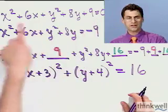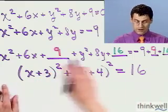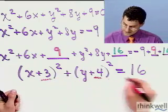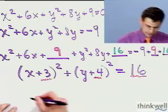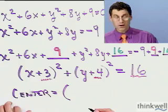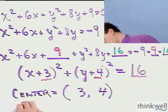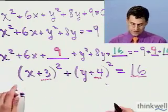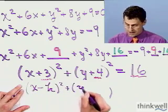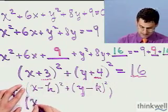So this really complicated-looking algebraic expression can be massaged via completing the square twice into standard circle form. Now we can read it off. You might think the center is at 3, 4 — that's a great guess, but you're not quite remembering the formula. The circle equation is x minus h, squared, plus y minus k, squared, equals r squared.